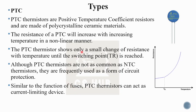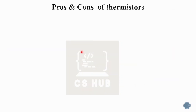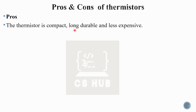Negative temperature coefficient is NTC; positive temperature coefficient is PTC. NTC shows an inverse relation between temperature and resistance. PTC is positive, so it shows a direct relation between temperature and resistance, both in a non-linear manner. Advantages include: compact, long-lasting, durable, less expensive, and faster response.